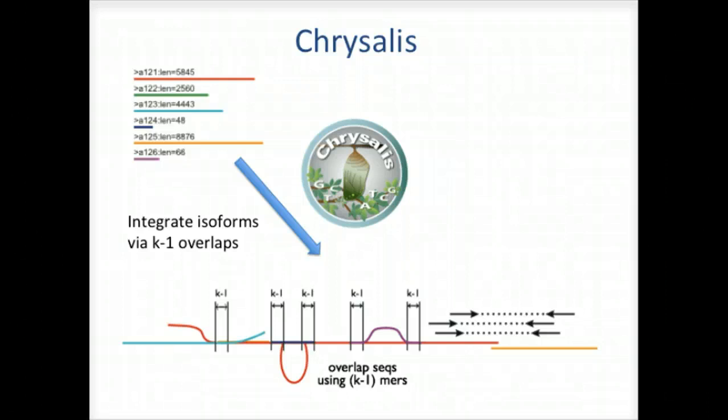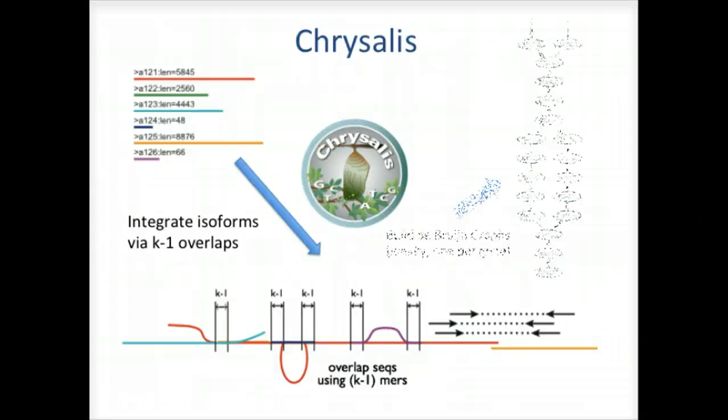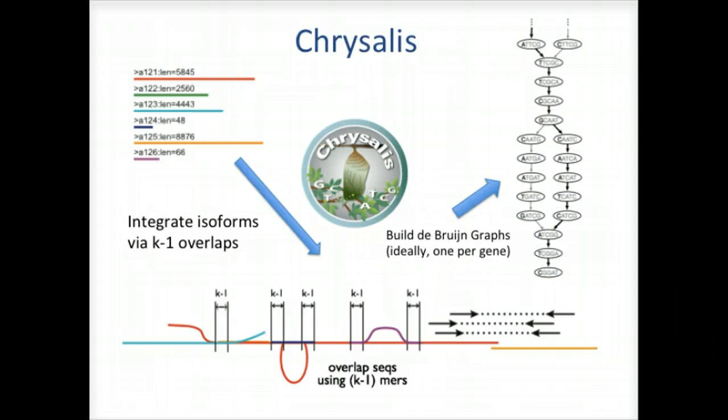Here's a high-level overview of Chrysalis operations. Chrysalis clusters related contigs based on these k-1-mer overlaps. Chrysalis also leverages read pairing information to join minimally overlapping contigs. After identifying the connected Inchworm contigs, it then constructs a separate de Bruijn graph for each group.